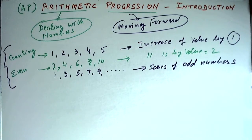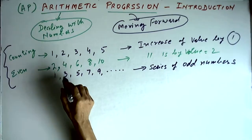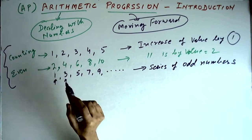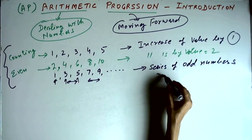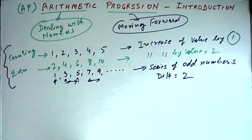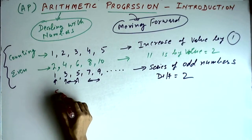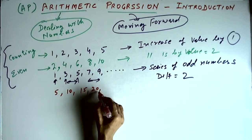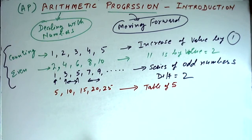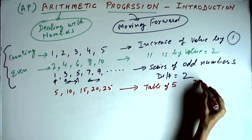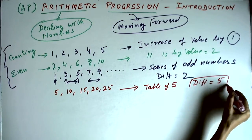So typically, let us summarize what is arithmetic progression. Arithmetic progression is a series of terms where the difference between two consecutive terms is the same. For example, in the odd number series, the difference between 3 and 1, 5 and 3, 7 and 5, 9 and 7 is always 2; in the counting series it was 1. There could be another series like the table of 5: 5, 10, 15, 20, 25 — this is also an arithmetic progression.